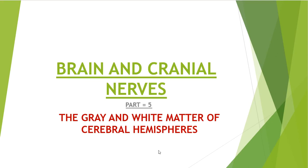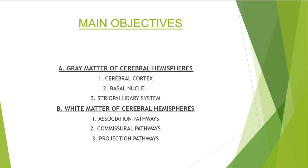Today we take a new topic about the gray and white matter of cerebral hemispheres. This is the fifth part of Brain and Cranial Notes. The main objectives are: first, gray matter of cerebral hemispheres including cerebral cortex, basal nuclei, and the striopallidary system; and second, white matter of cerebral hemispheres constituting association pathways, commissural pathways, and projection pathways.